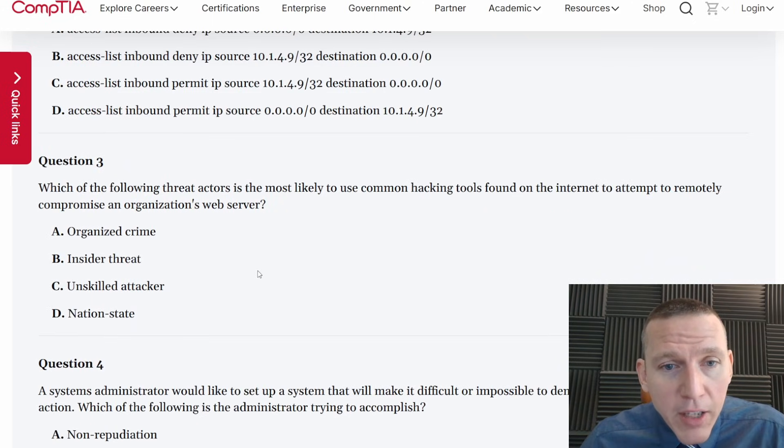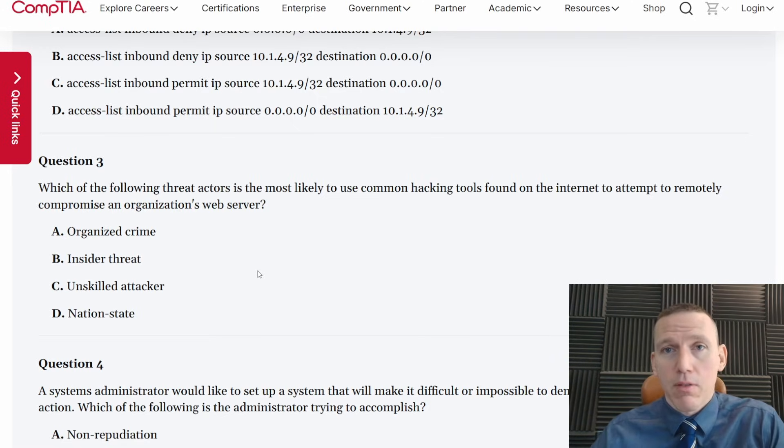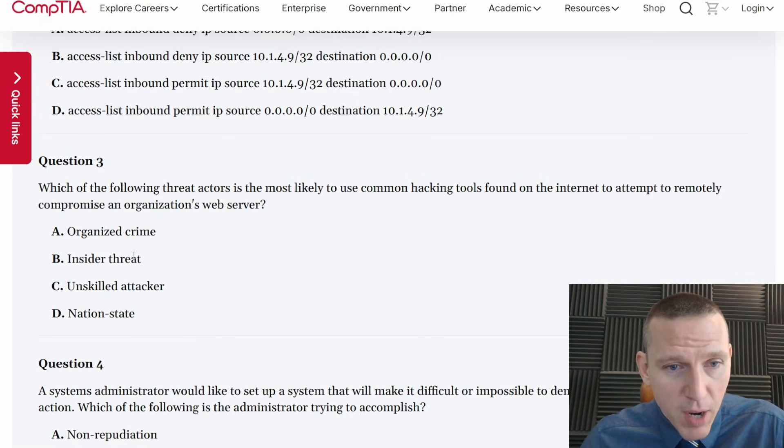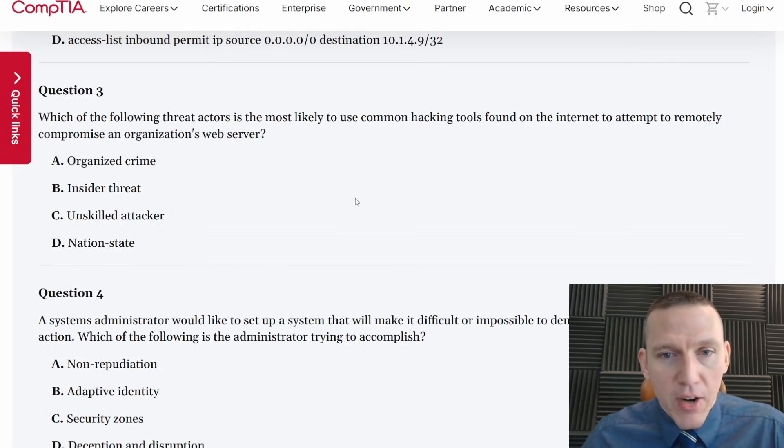Question three, which of following threat actors is most likely to use common knowledge hacking tools found on the internet to attempt to remotely compromise organization's web server? We have script kiddies, we have organized crime, hacktivists, and nation state actors, but it's going to be a script kiddy. Organized crime, insider threat, unskilled attacker, nation state. Unskilled attacker is also a script kiddy. Sometimes you'll see script kiddy. Sometimes you'll see unskilled attacker. Unskilled attacker is a little more common.